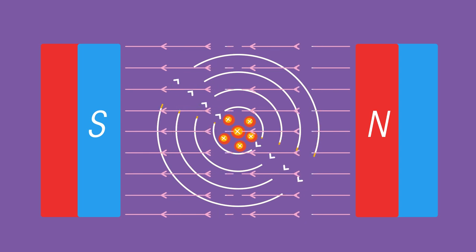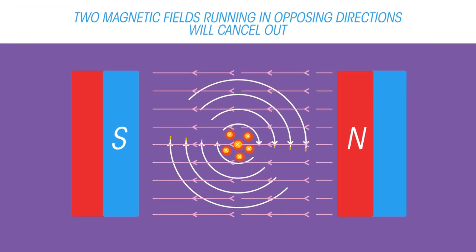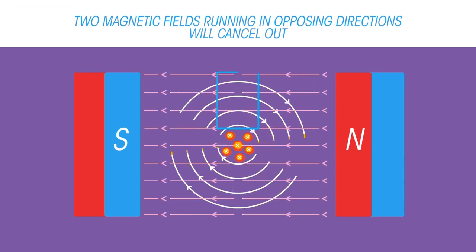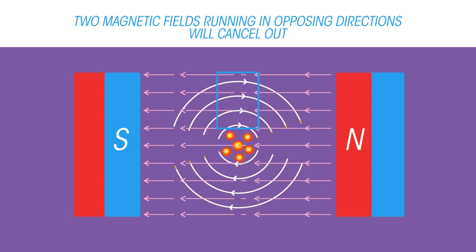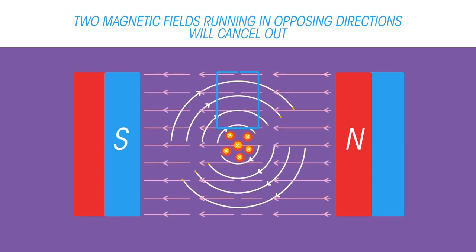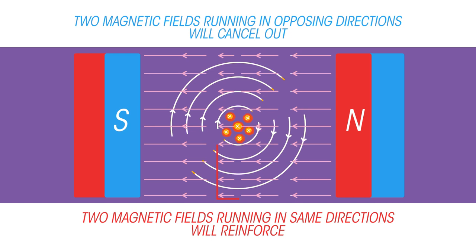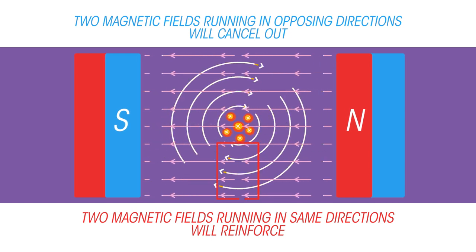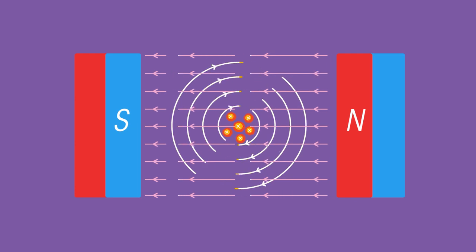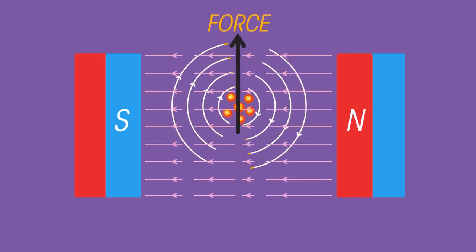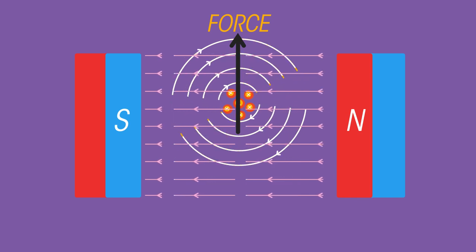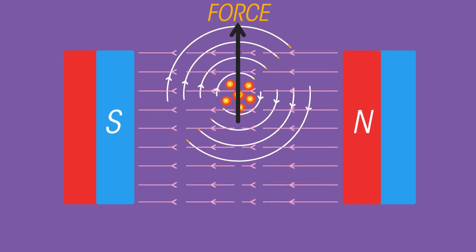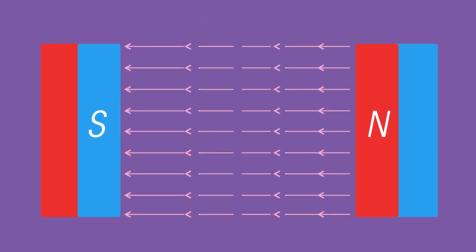These magnetic fields interact. Above the wire, these two fields run in opposite directions and so cancel each other out. Below the wire, the fields run in the same direction and reinforce each other. The wire is pushed away from the strong field towards the weak one, so the wire will be pushed vertically upwards out of the magnetic field.